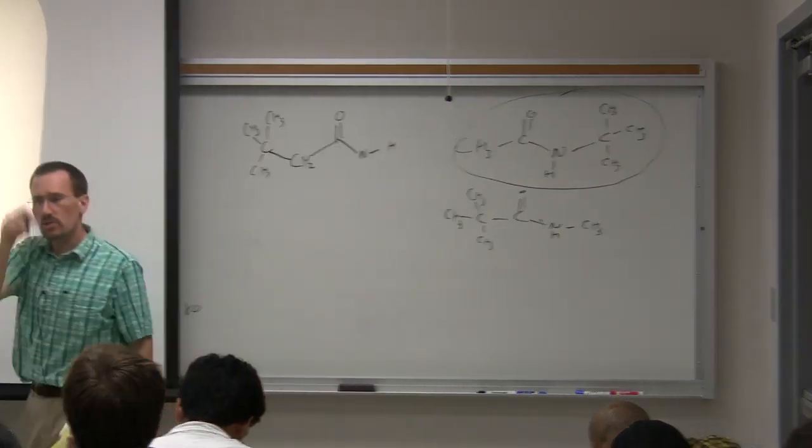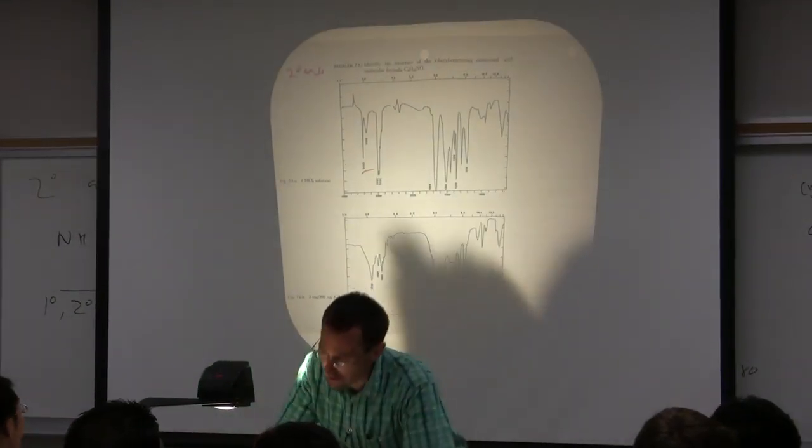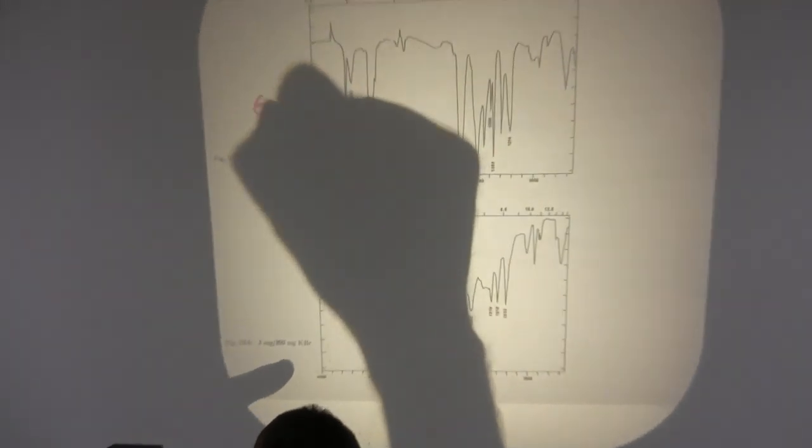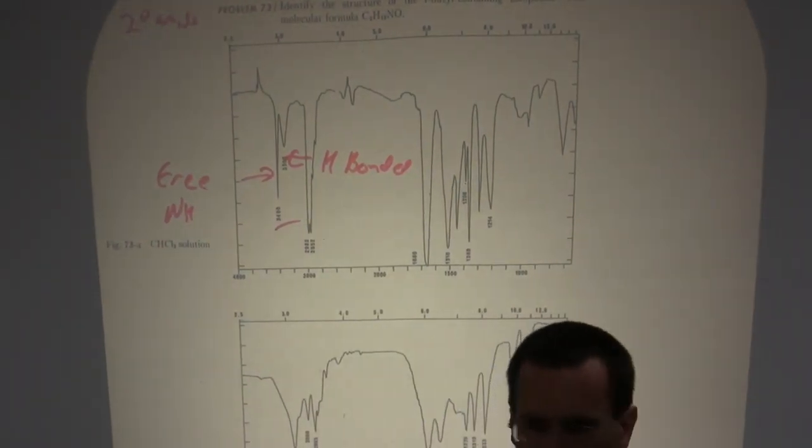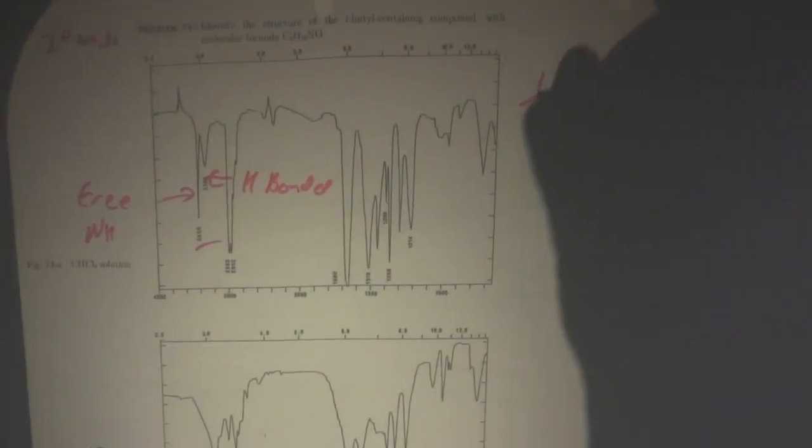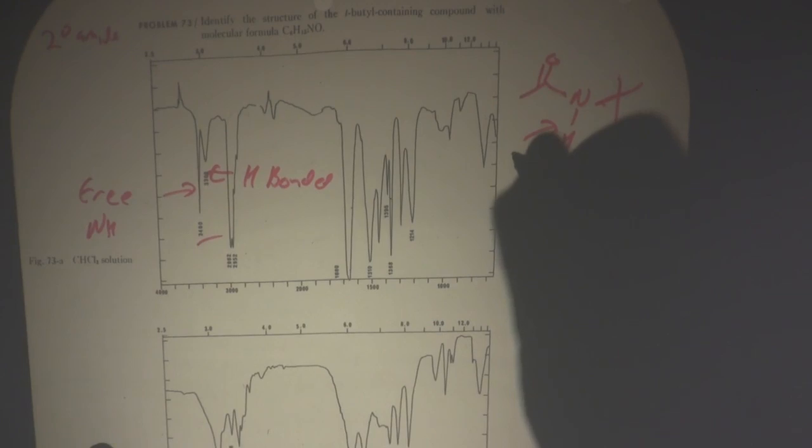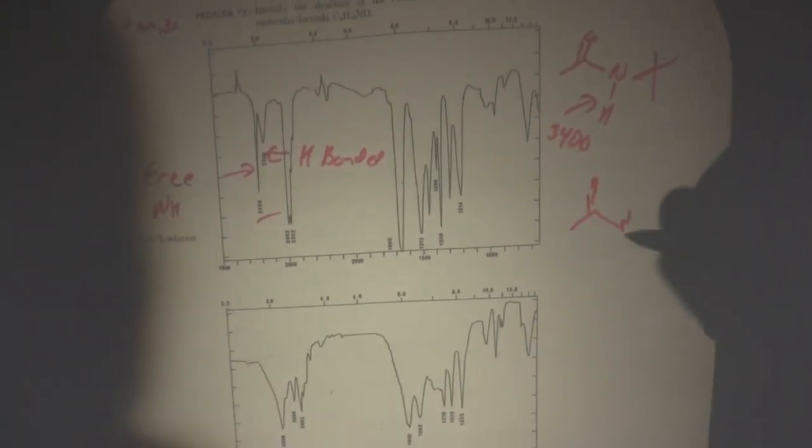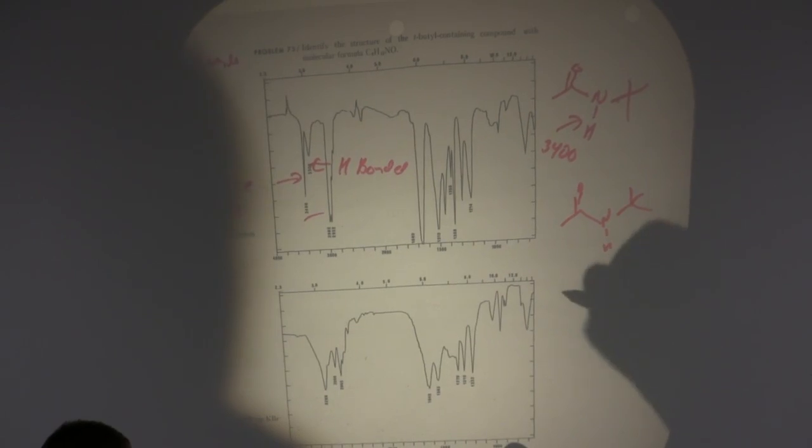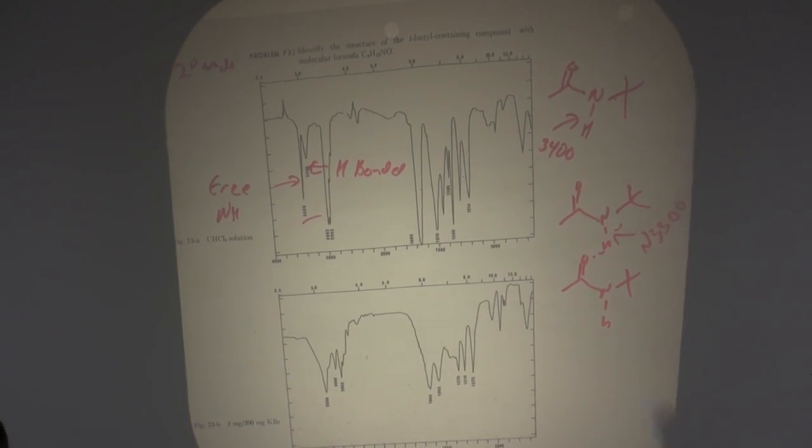So why are there two peaks then? This is tert-butyl acetamide, it's a secondary amide. This is our free NH, this is hydrogen bonded. Typically you'll be working with like a 5 or 10 percent solution, so many of the molecules are monomeric and you see a band for the NH stretch at about 3400. You're also going to have some cases in which the molecules are hydrogen bonded together, either to form two or more molecules. The hydrogen bonded NH stretch is going to be the one at about 3300 wave numbers.